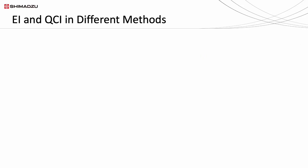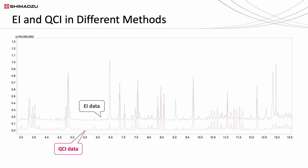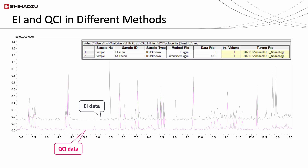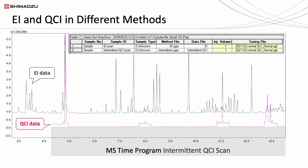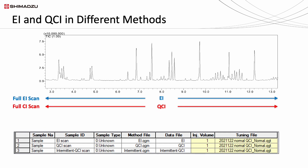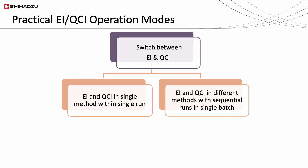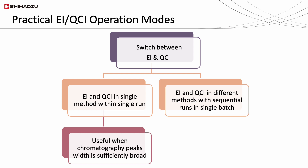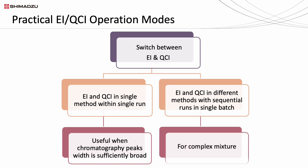Next, let us move on to EI and QCI data acquisition in different methods. By using smart IS, the EI and QCI data acquisition can be divided into multiple methods and applied in a single batch run easily. This approach is practical for complex mixtures eluted from a GC column. During intermittent QCI scan, the smart IS will only scan at a particular period. The user may choose to perform full EI scan, full CI scan, or intermittent QCI scan. EI and QCI data acquisition within a single method is useful when peak width is broad enough, while EI and QCI in different methods within a single batch is useful for complex mixture separation.